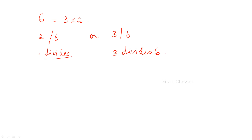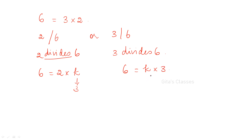So when will you say that 2 divides 6? If you can write 6 as 2 into some integer k — here k is equal to 3. Similarly, 3 divides 6 when 6 can be written as k into 3 — here k is 2. So when it is possible to multiply that number with an integer to get the required number, we say that they divide.